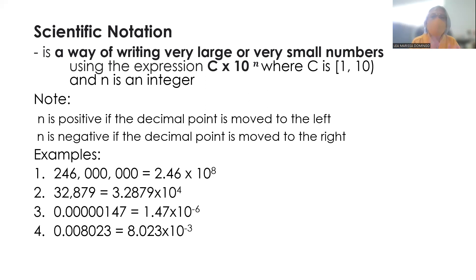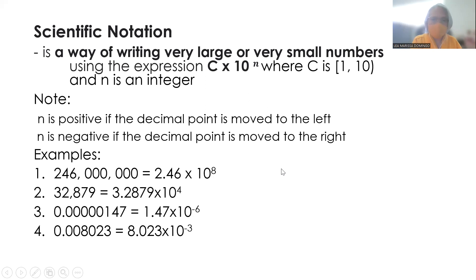So ang unang ginagawa ay yung pagpili ng c. Piliin muna yung c, gamitin lang yung rule na ito — closed interval 1, open interval 10. And then kung i-move sa left, positive yung n. Kung i-move sa right, negative. Pansin ninyo naman, pag i-move mo yung decimal point to the right, yung mga numbers na yun ay less than 1. Kaya dapat negative — dapat walang conflict.